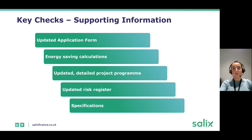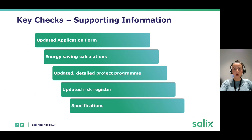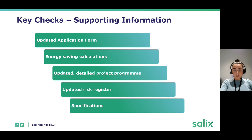Key checks we'll perform include reviewing the updated application form to ensure it's compliant with eligibility criteria. For example, if you're removing a site, you can no longer do energy efficiency measures there, as scheme criteria require a measure to decarbonise the heating at that site. We'll also check compliance with the £325 per tonne of carbon criteria; anything above that threshold must be funded by a client contribution.